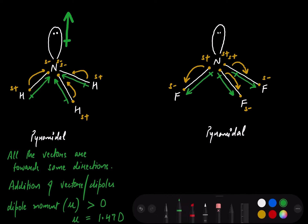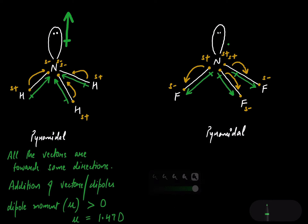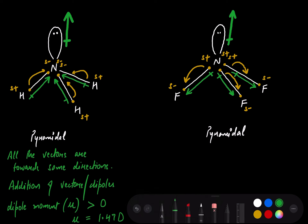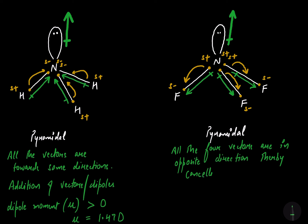Now let's talk about the lone pair moment in NF3. As I mentioned for NH3, the lone pair also has a vectorial direction, pointing opposite to the central element — that is, opposite from nitrogen. So in NF3, all four vectors — the three bond dipoles pointing towards fluorine and the lone pair moment pointing away from nitrogen — are in opposite directions, thereby cancelling each other, but not completely.